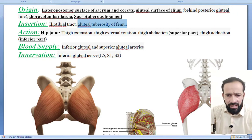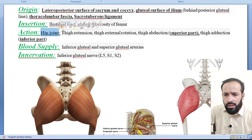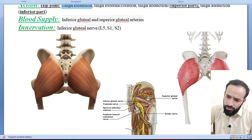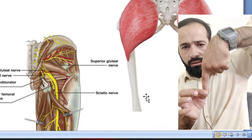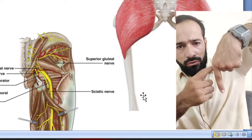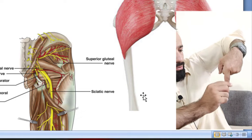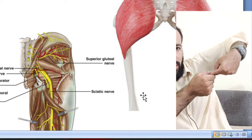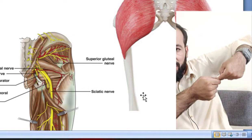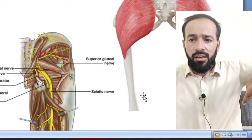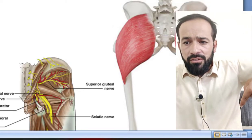What are its actions? At the hip joint it causes thigh extension — whenever it contracts, it will pull your thigh backward. And then there is thigh external rotation, where the muscle contracts and pulls your thigh a little bit laterally — lateral or external rotation.